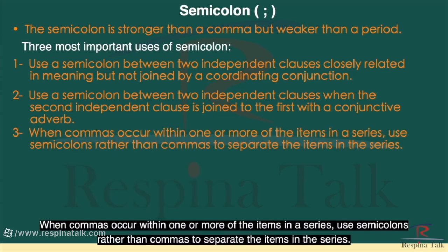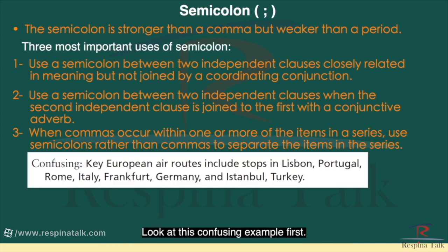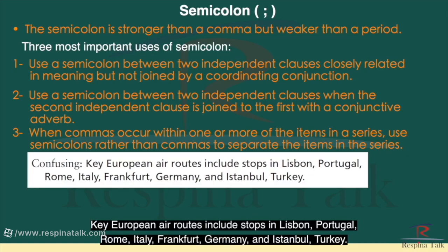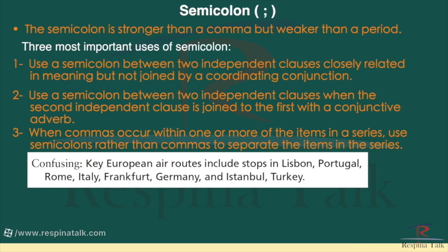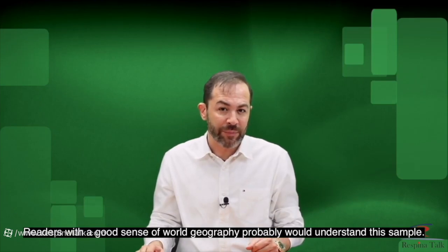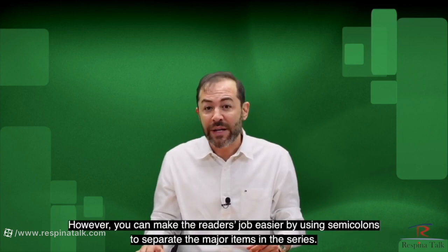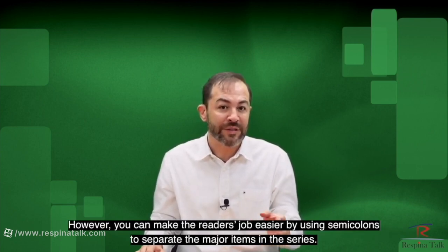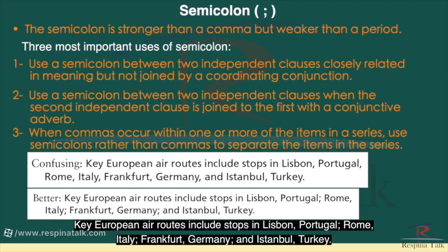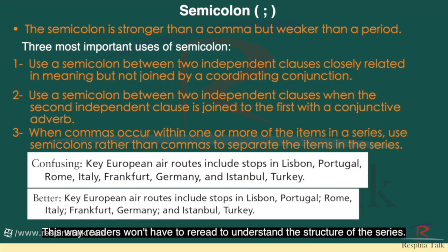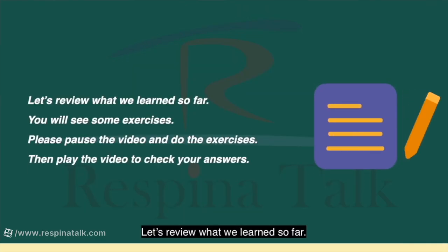When commas occur within one or more of the items in a series, use semicolons rather than commas to separate the items in the series. Look at this confusing example first: 'Key European air routes include stops in Lisbon, Portugal, Rome, Italy, Frankfurt, Germany, and Istanbul, Turkey.' Readers with a good sense of world geography probably would understand this sample. However, you can make the reader's job easier by using semicolons to separate the major items: 'Key European air routes include stops in Lisbon, Portugal; Rome, Italy; Frankfurt, Germany; and Istanbul, Turkey.' This way, readers won't have to reread to understand the structure of the series. Please pause the video and do the exercises, then play the video to check your answers.